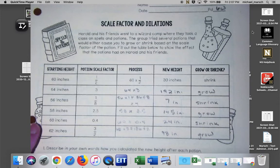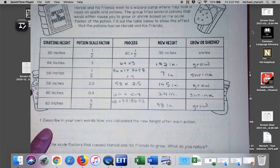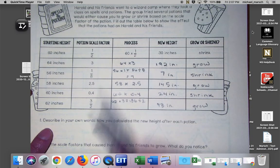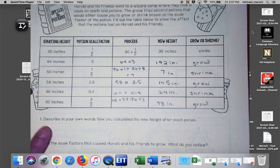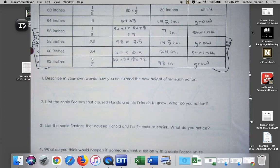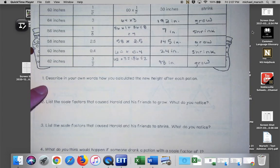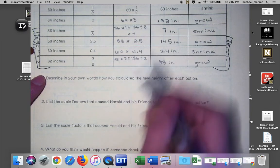Okay, so let's go ahead and analyze what happened here. Obviously we're multiplying by our scale factor to get a new value and then we decided if they were growing or shrinking. Describe in your own words how you can calculate the new height after each potion. So what did we do here, what was our process?